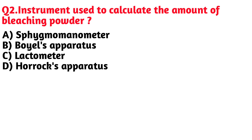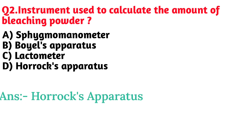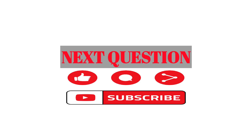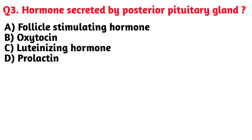Next question: Instrument used to calculate the amount of bleaching powder. Option D. Horox apparatus is the correct answer.